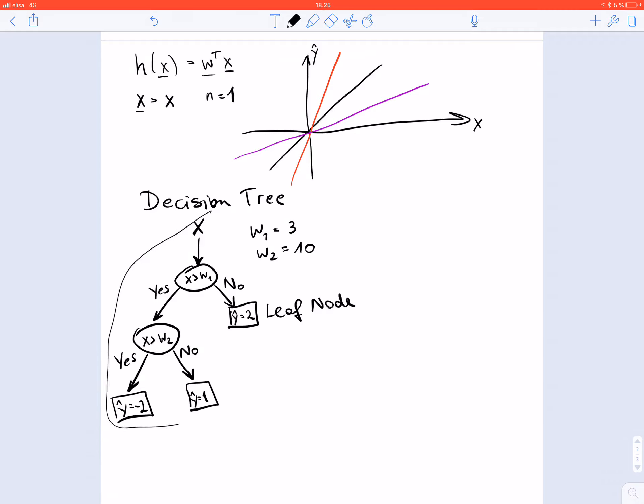This decision tree represents a particular predictor map. We can also represent it or draw the map here. On the x-axis we draw the feature, this is the single feature, and the y-axis represents the values of the predicted label. We have to follow these tests. The first test tests if x is larger than w1, which is 3.